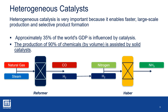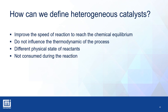How can we define a heterogeneous catalyst? Generally, a catalyst is a substance that, when added in the context of a chemical reaction, accelerates the achievement of chemical equilibrium between reactants and products, but without influencing the thermodynamic equilibrium of the process. Heterogeneous catalysts are in a different physical state from the reactants, which are usually liquids or gases, and can thus be easily separated from the reaction environment. Catalysts are not consumed during the reaction, but undergo a slow transformation with use, causing a general decrease in their activity and changes in their selectivity.